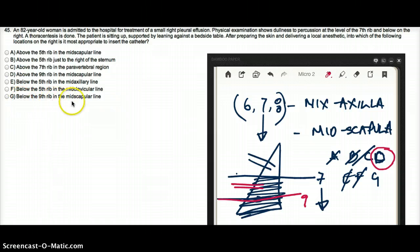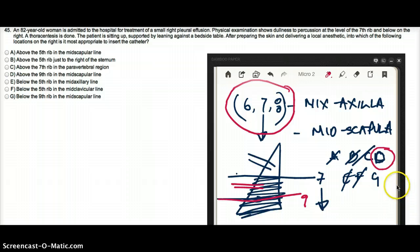What about G? Below the 9th rib in the mid-scapula? Below the 9th rib, just by standard practice, it's not usually done below the 9th rib. It should be close to 6, 7, and 8. So, for that reason, I will rule out G, and I would pick D in this particular question, which is above the 9th rib in the mid-scapular line.